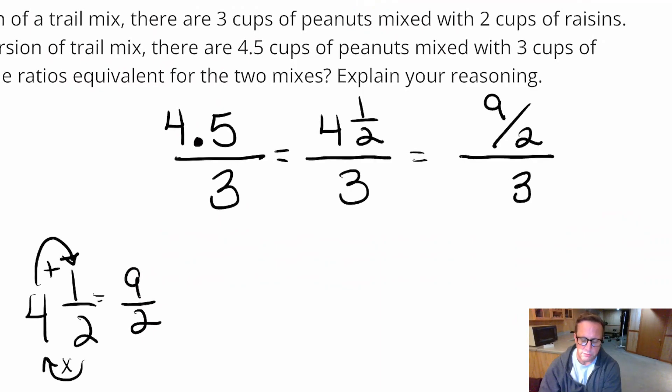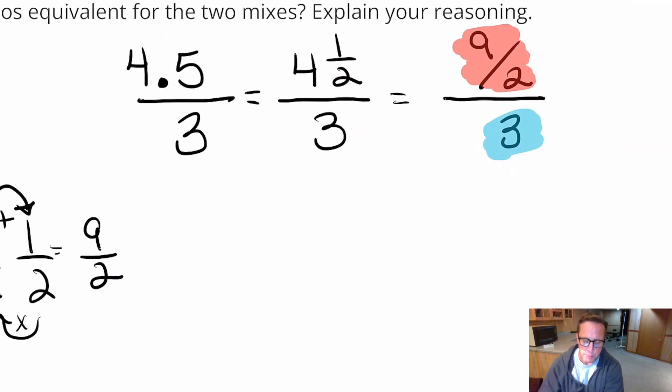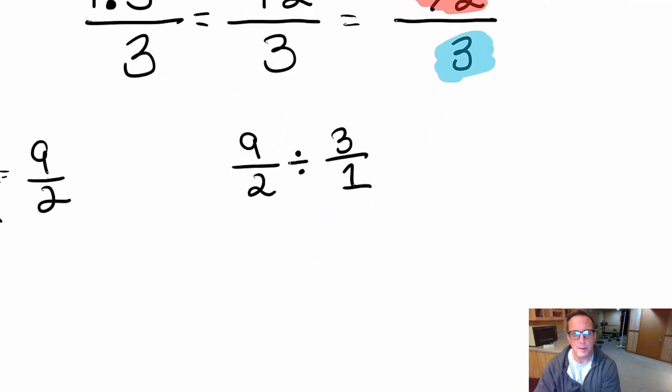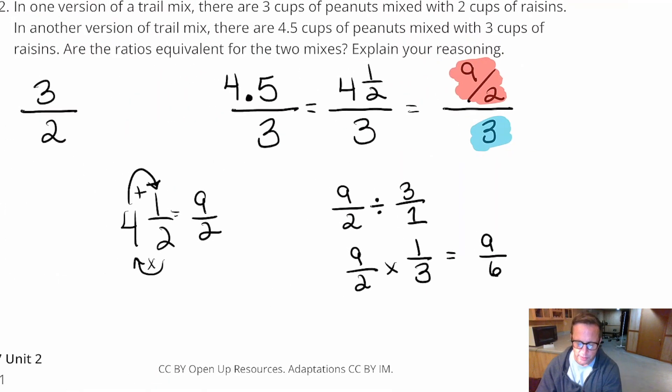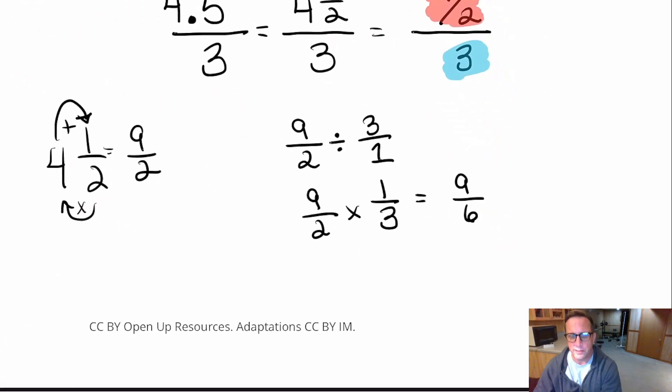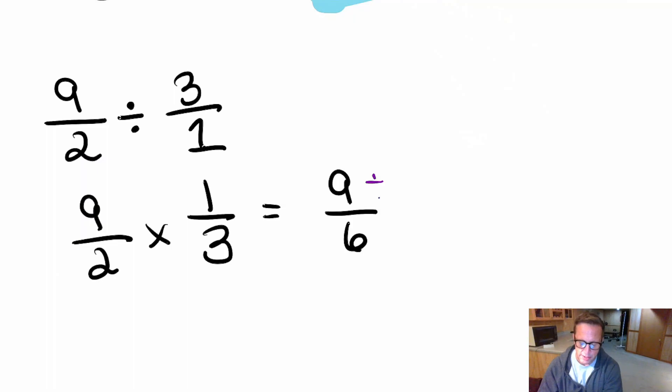So fractions are nothing but division problems, right? Top number divided by the bottom number. Numerator divided by the denominator. So let's see what happens when we do nine halves divided by three. I'm going to write three over one. So nine halves divided by three. So I'm going to do the keep change flip-a-rooney here. You're going to keep nine halves the way it is. Change division into multiplication. And then flip this. That's one-third. And then you get nine over six.